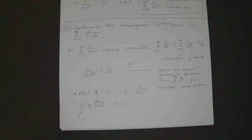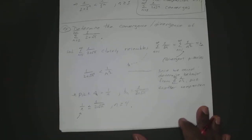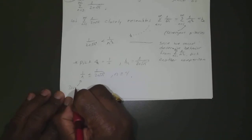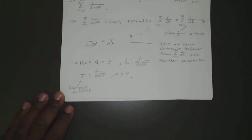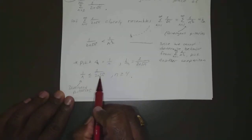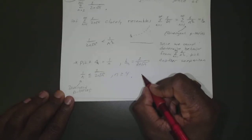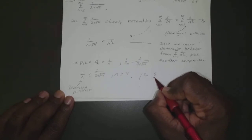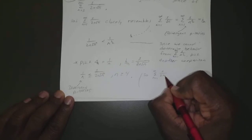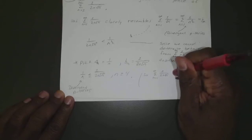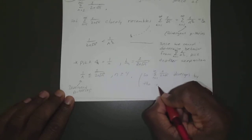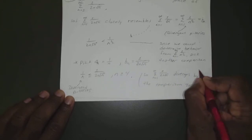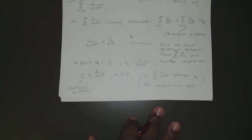We know the sum of 1/n diverges from the p-series — p equals 1 — so it's a divergent p-series, or harmonic series. If this diverges and is always less than 1 over 2 plus square root of n, then that one diverges also. So the sum from n equals 1 to infinity of 1 over 2 plus square root of n diverges by the comparison test.